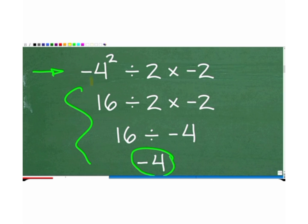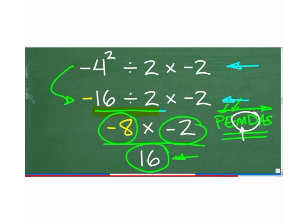That gives us minus 4. We also have the scenario whereby we have minus, then we multiply 4 times 4 and get 16, divided by 2 times minus 2. Then we use this 16 divided by 2 — 16 divided by 2 gives us minus 8, then times minus 2.